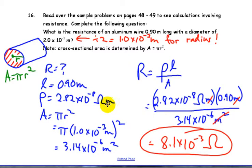So you set up your equation. R is equal to rho times L over A. 2.82 times 10 to the minus 8 ohm meters times the length, 0.90 meters divided by 3.14 times 10 to the minus 6 meters squared. And I get 8.1 times 10 to the minus 3 ohms. So make sure you run that through your calculator and get the right answer there.